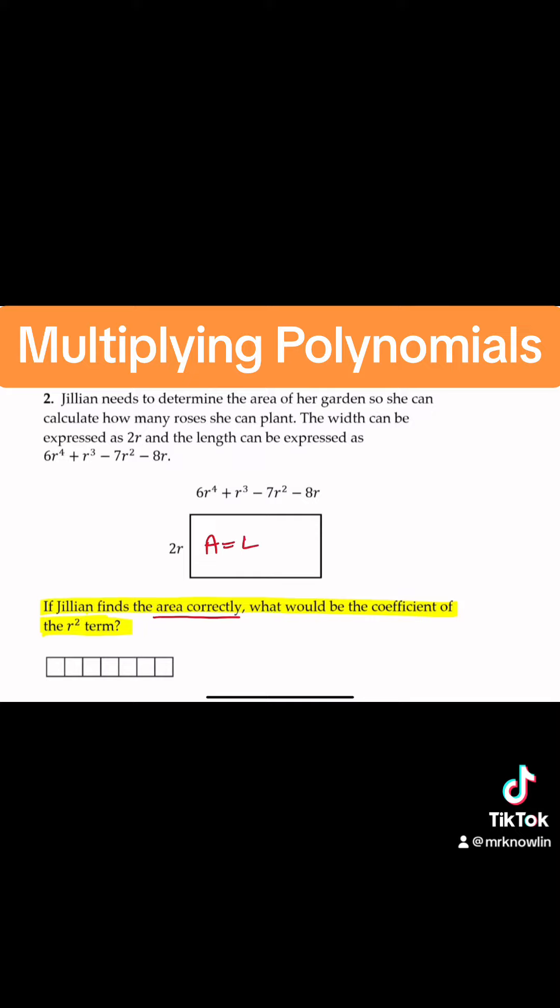And the area of a rectangle is length times width. In the passage above, they already tell us what they want the length and the width to be. Maybe we can go ahead and start from there.